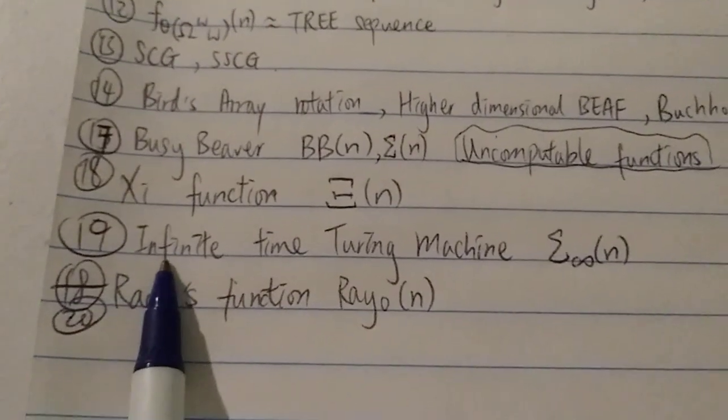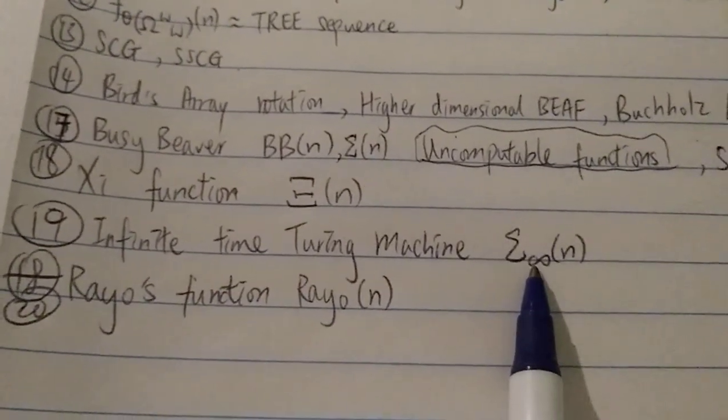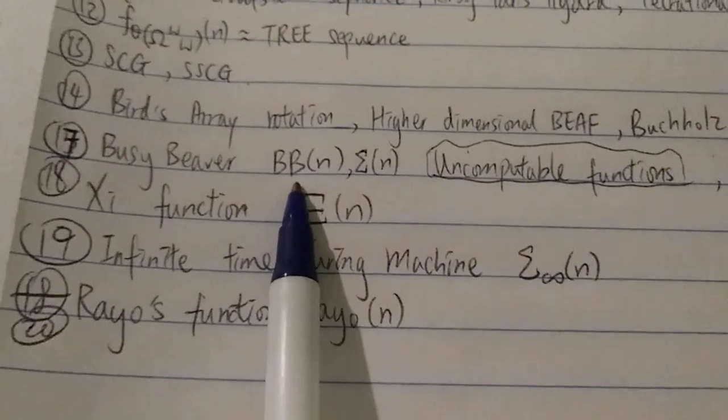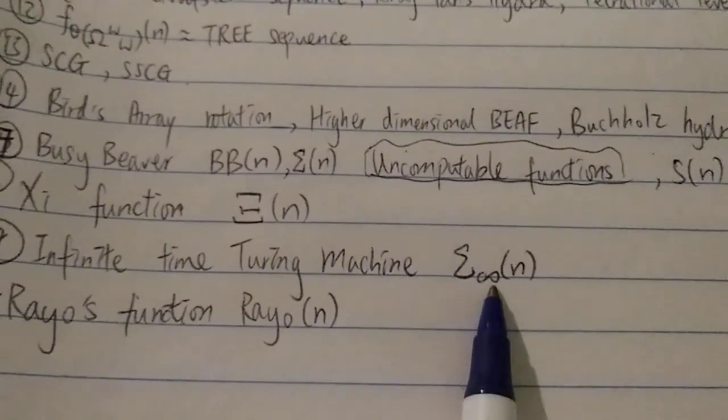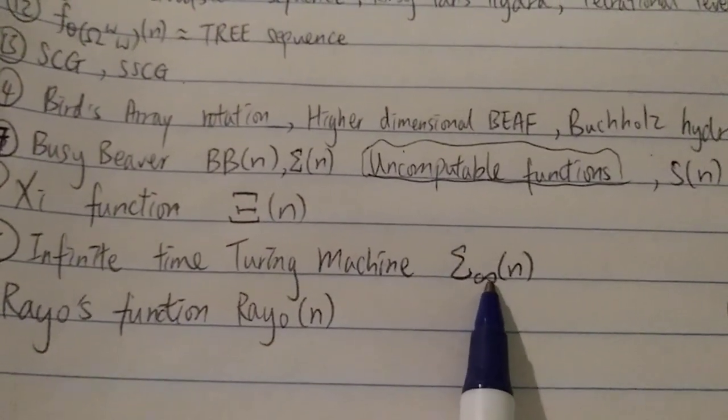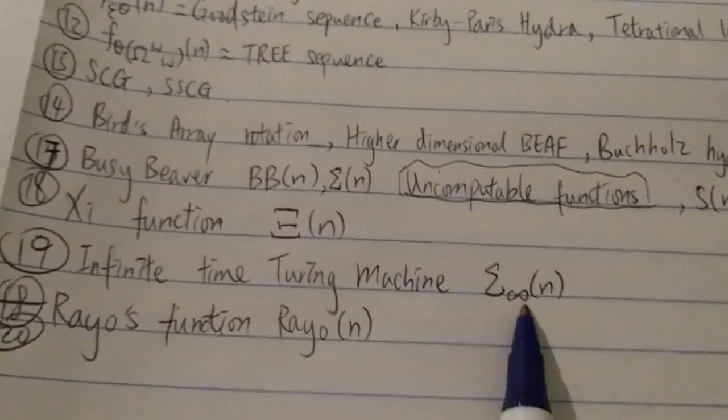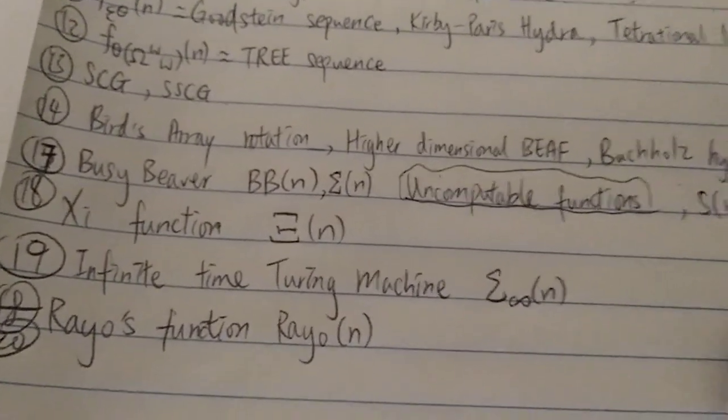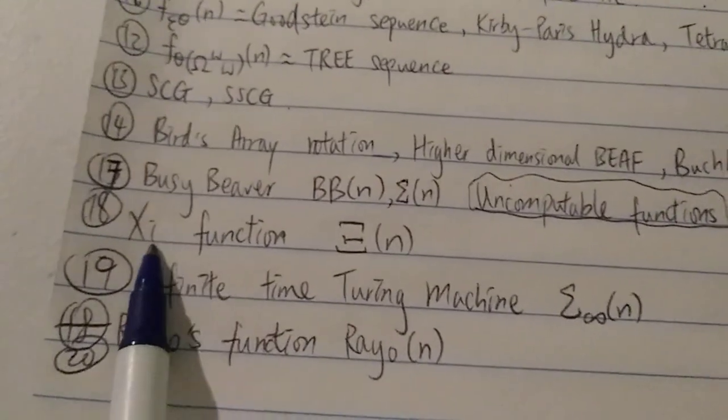And next, we have the infinite time Turing machine, which is based on the busy beaver. But instead, we have an infinite symbol over here, n. This one, at least according to Googleology, goes even faster than the Xi function.